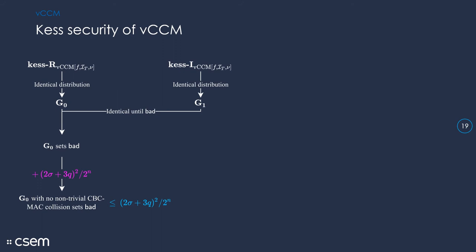The main and non-trivial part of the analysis is, of course, the analysis of KISS security of VCCM. For this purpose, we used the framework of code-based games where we defined two games, G0 and G1, which produce the identical distributions as the real and ideal game of KISS respectively, such that these two games had the same code except for what happens after a flying bad event. And then the analysis was just looking at what is the probability bad is set.